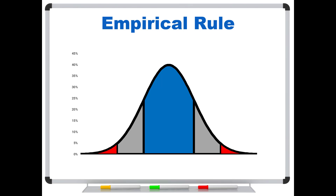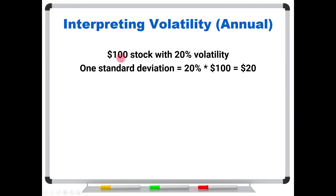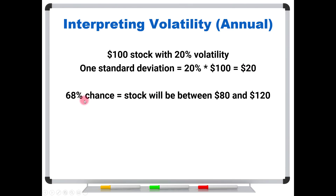Now, if we know this information, we can use it to interpret volatility. Let's say that we have a $100 stock trading at 20% volatility. A one standard deviation move is just the 20% volatility figure times our stock price, so we know that a one standard deviation move in dollars is $20. Applying the empirical rule, there's a 68% chance that the stock will be somewhere between $80 and $120 in a year — that's the current stock price of $100 plus or minus one standard deviation.